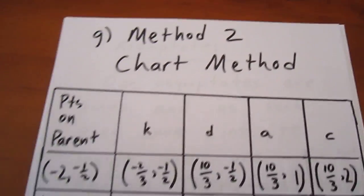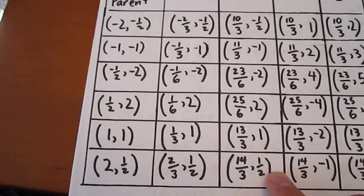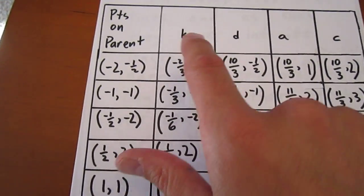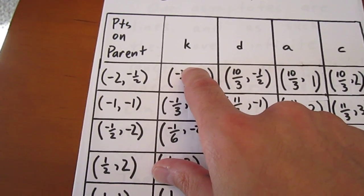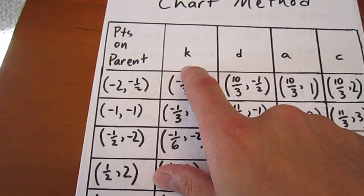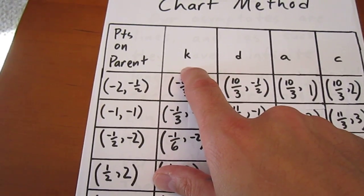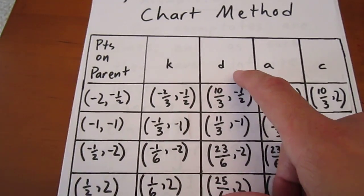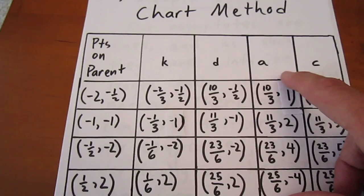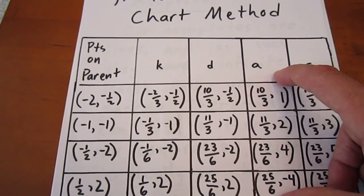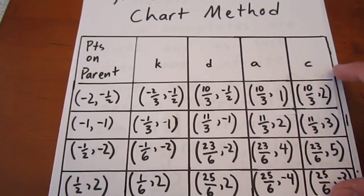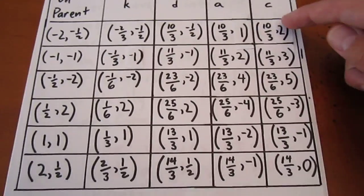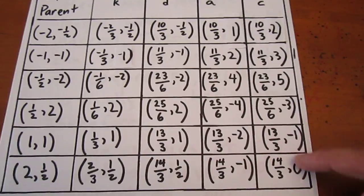The chart method is rather interesting in this case. We have 6 different points on the parent function. When we divide each x-coordinate by 3, then add 4 to each x-coordinate, then multiply each y-coordinate by negative 2, and then add 1 to each y-coordinate, what we end up with are these new coordinates.